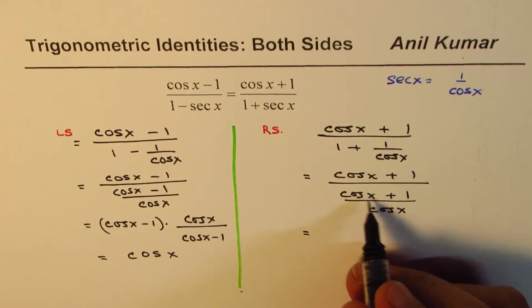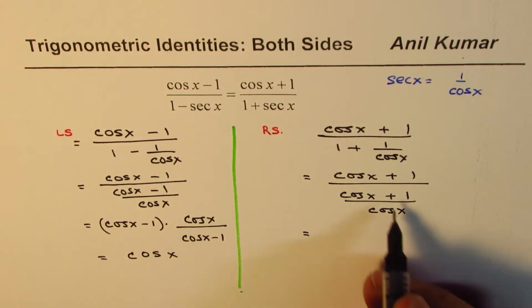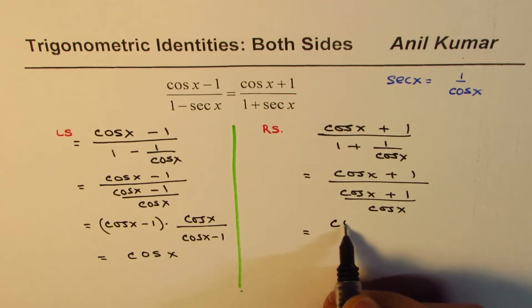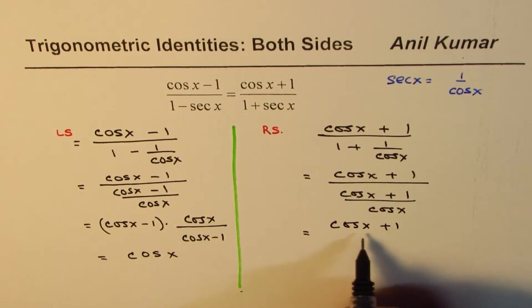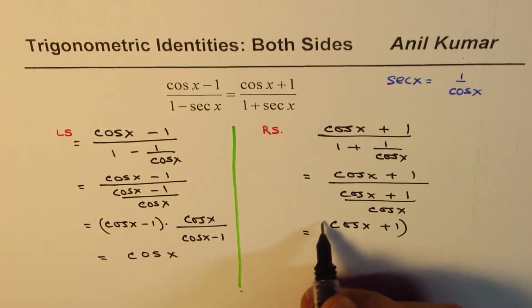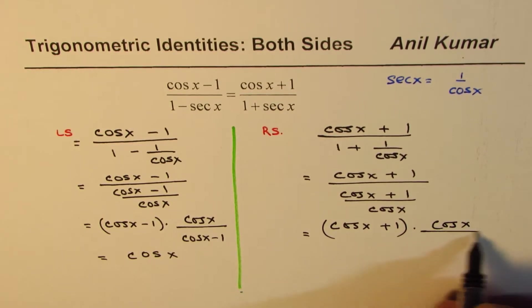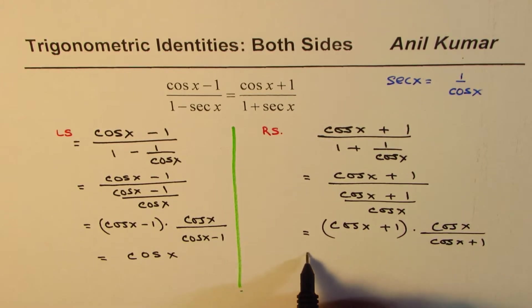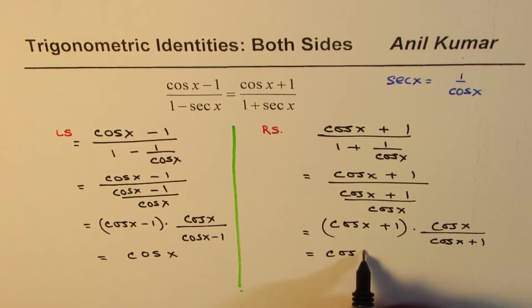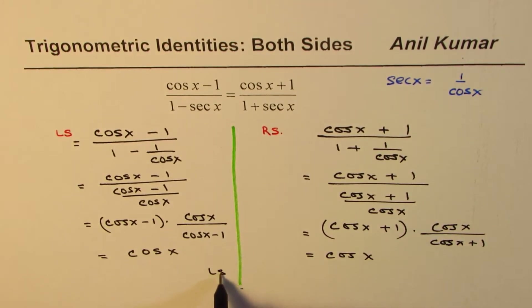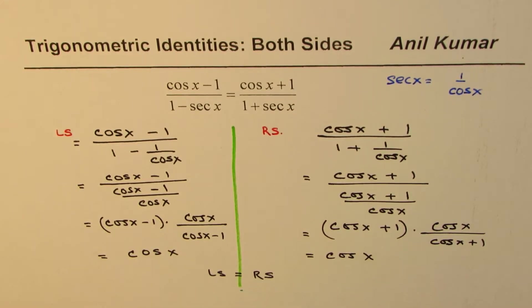Instead of that, I'm adding a step - it's a good idea to add this step - (cos x + 1) times cos x/(cos x + 1). They get cancelled and we get cos x. So we know left side equals right side, and that is how we can prove this particular identity.